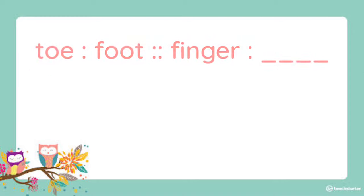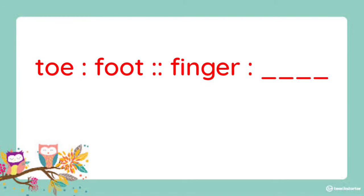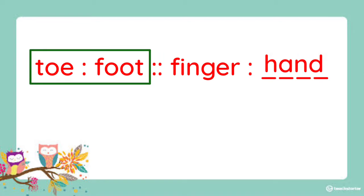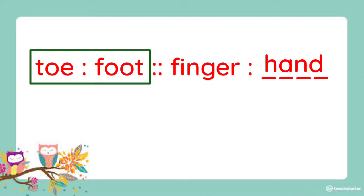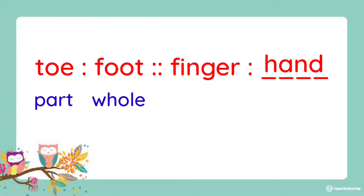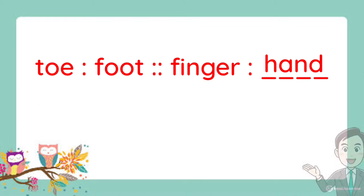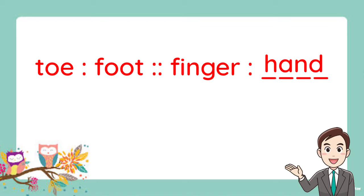Another one. Toe is to foot as finger is to blank. What do you think is the answer? It is hand. Let us examine the first pair — toe and foot. What is the relationship between them? Toe is part of the foot, right? So we can say it is part to whole. And so, finger is what part of the body? Hand, right. So the complete analogy is toe is to foot as finger is to hand.